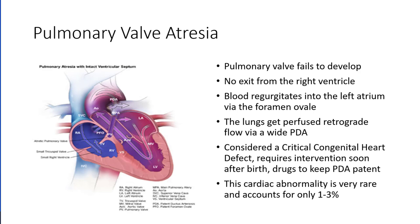Then there's pulmonary valve atresia. Again, atresia means the valve fails to develop, so there is no exit from the right ventricle. Blood regurgitates into the left atrium through the foramen ovale, and this is a recurring theme. Quite often these kids may have a PDA or a patent foramen ovale, and they'll try to keep them open because the only way to get any circulation is because of the PDA or the foramen ovale still being present.